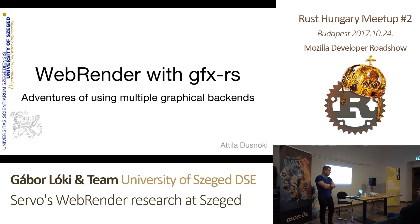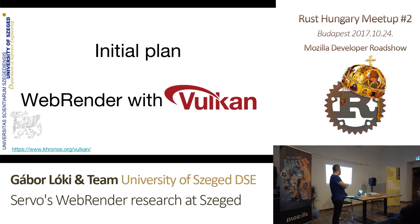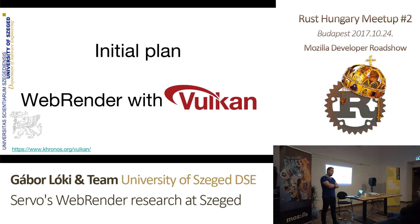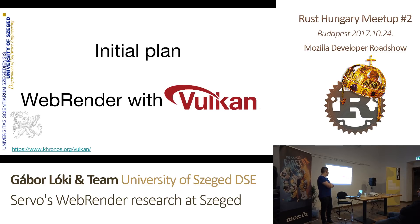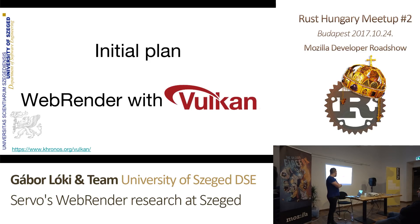Our main plan for this year was to replace WebRender's current graphics API, which is OpenGL. The next big thing at the time was Vulkan, so we thought: why not change it to Vulkan, maybe speed things up, and how cool would it be to support multiple backends?